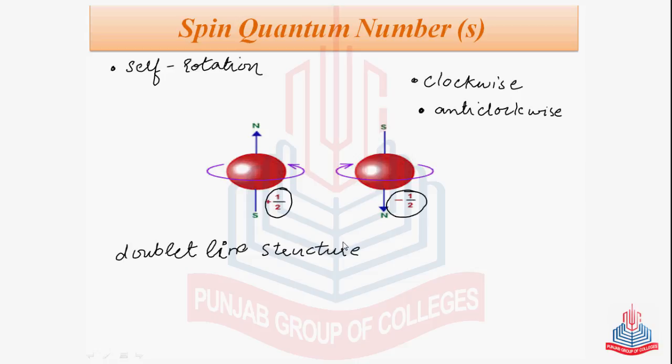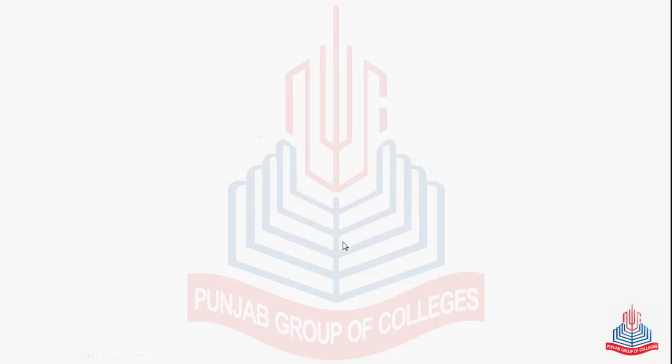So now finally, after completing the four quantum numbers, let's have a comparison between these four quantum numbers. As we said in the start, a single quantum number is not enough to completely describe an electron. For the complete description of an electron, we have a set of integral numbers called the quantum numbers.